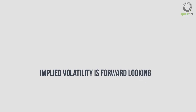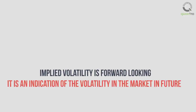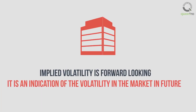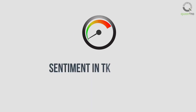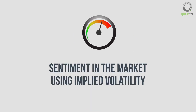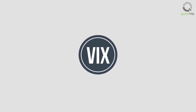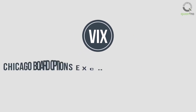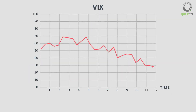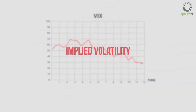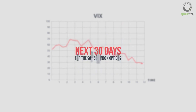Implied volatility is forward-looking, and it is an indication of the volatility of the future market. Volatility index or VIX is one such indicator that helps us understand the sentiment in the market using implied volatility. VIX is a trademark ticker symbol for the Chicago Board Options Exchange, CBOE, volatility index. It is a measure of the implied volatility over the next 30 days for the S&P 500 index options.